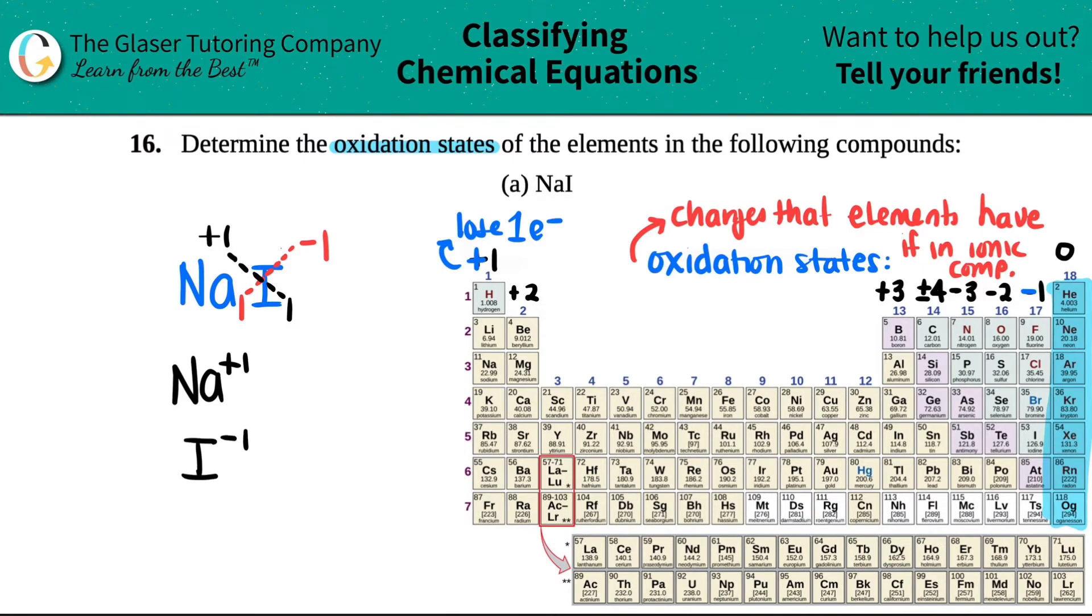So now technically this is telling me that sodium was a plus one and iodine was a negative one. Let's see if these oxidation states are what the trend says. Sodium is over here—oh, it's a plus one, this checks out. Iodine down here—it's in the negative one group. Oh, that checks out, so this is totally correct. When they say determine the oxidation states, all you have to do is know that sodium would be a plus one and then iodine would be a negative one oxidation state.